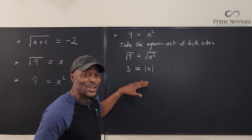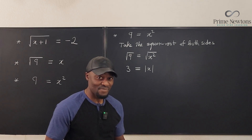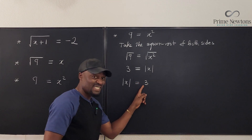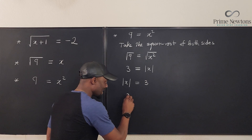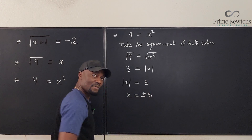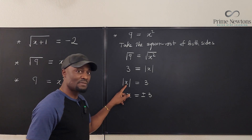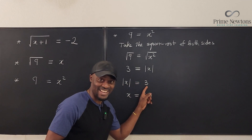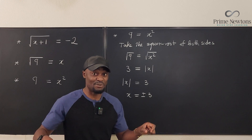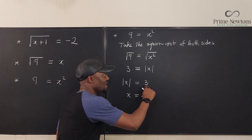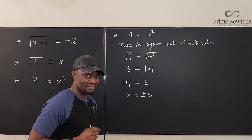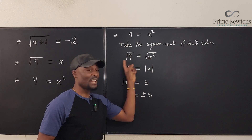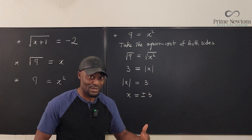Until you understand this, you will have a lot of confusion. If the absolute value of x equals three, then x must be plus or minus three — because the absolute value of positive three is three, and the absolute value of negative three is also three. Absolute value measures the distance of a number from zero, and distance cannot be negative. This is where your plus or minus comes in, and it only shows up when solving an equation. If you're not solving an equation, it can never be plus or minus.